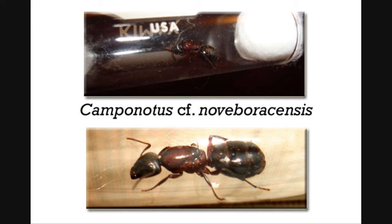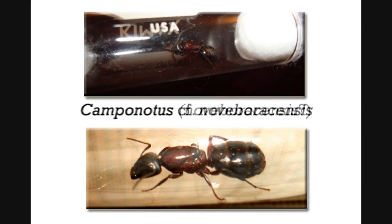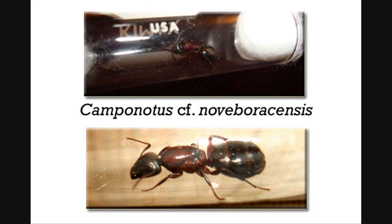The abbreviation 'cf.' is from the Latin confer, meaning 'compare to.' It is used to refer a specimen to an unknown species even though it may not be of that species, and is most often used when an identification is not confirmed. For example, if you have an ant you're pretty sure belongs to Camponotus and are almost sure its species is noveboracensis but not 100% certain, you can refer to it as Camponotus cf. noveboracensis — that way it lets everyone know what you believe the species is, but that it hasn't been confirmed.